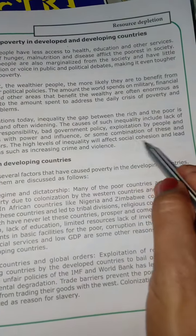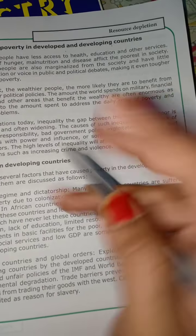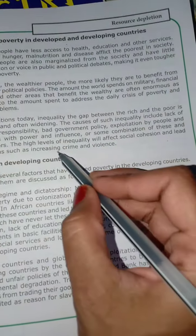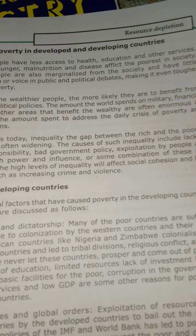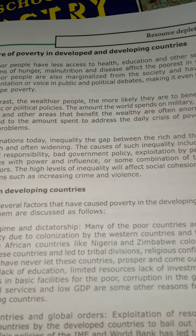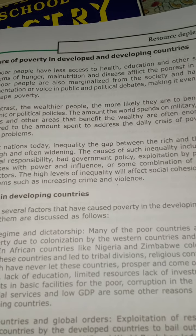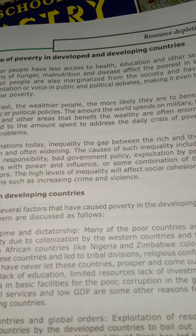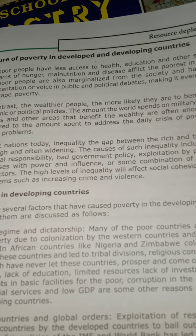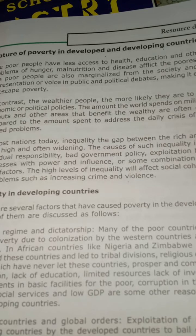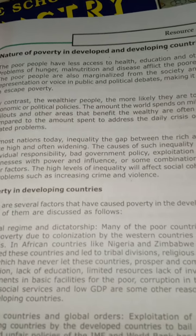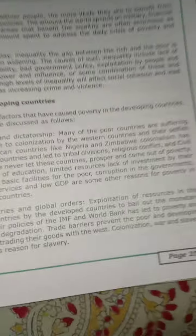There is a high level of inequality affecting social cohesion, which has led to an increase in crime and violence. When people don't have money to feed themselves, they turn to negativity, which causes crime and violence — social crimes that not only hamper society but are a threat and menace to the entire human resource.